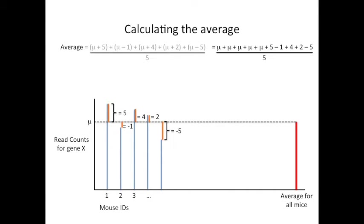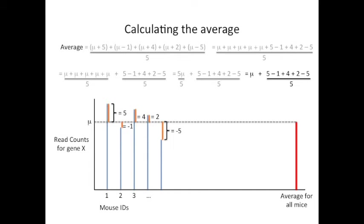First, I've shifted all the mu's to the left side of the numerator and all the differences from mu to the right side of the numerator. We can now split the equation into the sum of two fractions, the mu's divided by five plus the differences divided by five. Here we've just combined the addition of the mu's into a simple five times mu. When we do this, it's obvious that we can cancel out the five in the numerator and in the denominator.